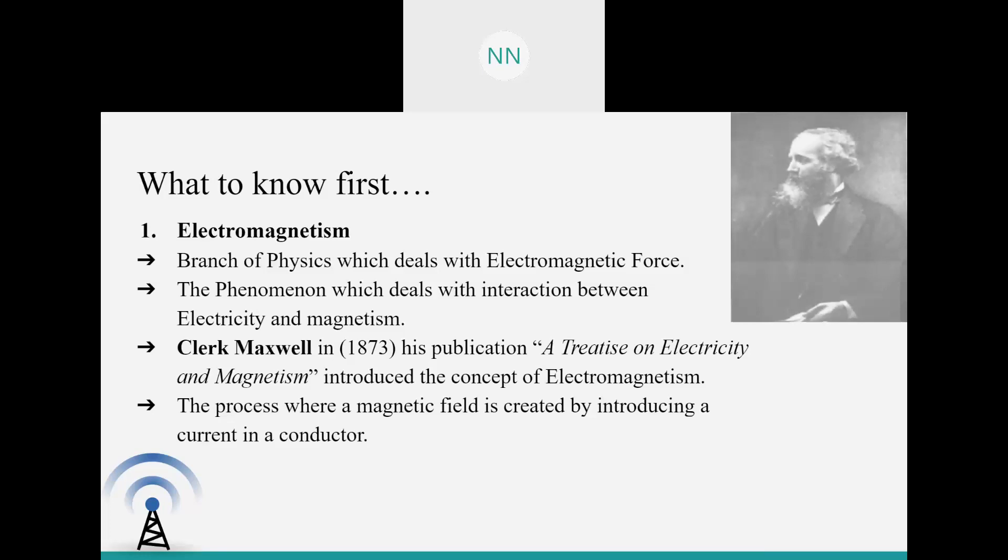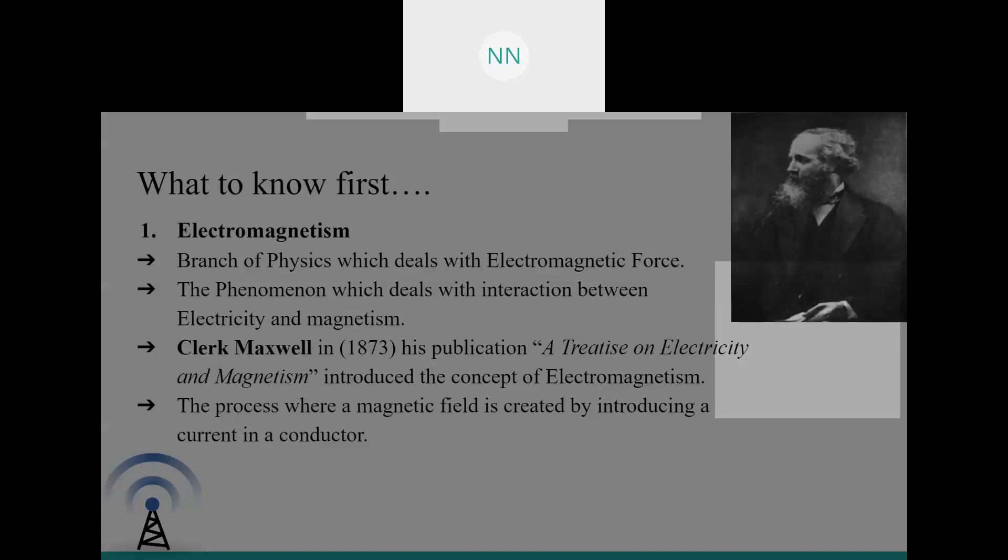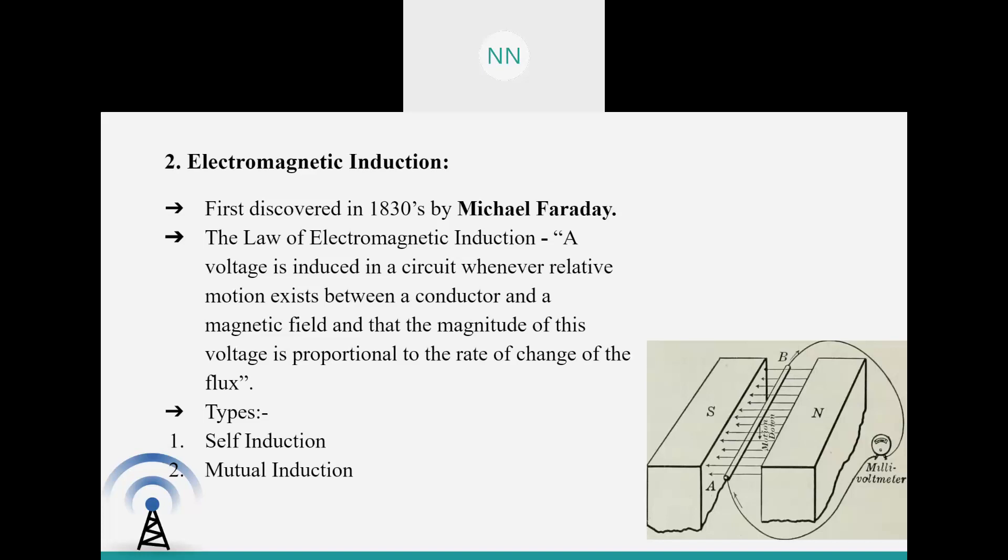The next thing you all have to know is electromagnetic induction. This is what the whole of wireless power transfer is based on. It was first discovered in the 1830s by Michael Faraday, and the law states that whenever a conductor is moved in a magnetic field, an EMF will be induced in the conductor, and the magnitude of that EMF will be directly proportional to the rate of change of flux, or simply, directly proportional to the speed of movement of the conductor in that magnetic field. It is basically of two types: self-induction and mutual induction. Here, in wireless power transfer, the principle uses mutual inductance, stated as the change in magnetic flux linked with one coil produces an EMF in the neighboring coil.